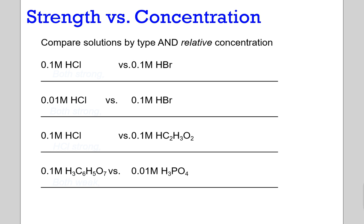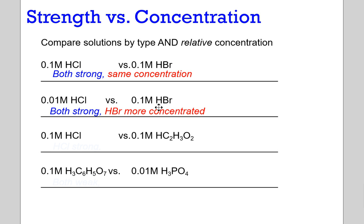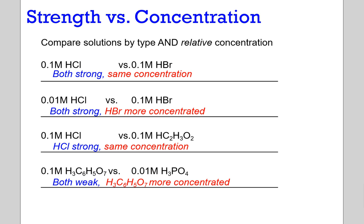The notion of strength versus concentration is also important. Concentration is simply the molar value. In one example, we have the same molarity and both are strong acids. In another, we have a lower molarity of hydrochloric acid and a higher molarity of hydrobromic — both are strong, but hydrobromic is more concentrated. A third example has both at 0.1 molar, but one is weak acetic acid and one is strong hydrochloric. Finally, citric acid and phosphoric acid — both weak, but citric is more concentrated. A weak acid can be very dangerous; just because it doesn't ionize well in water doesn't mean it can't react with your skin. So when assessing an acid, it's important to look at both concentration and strength.